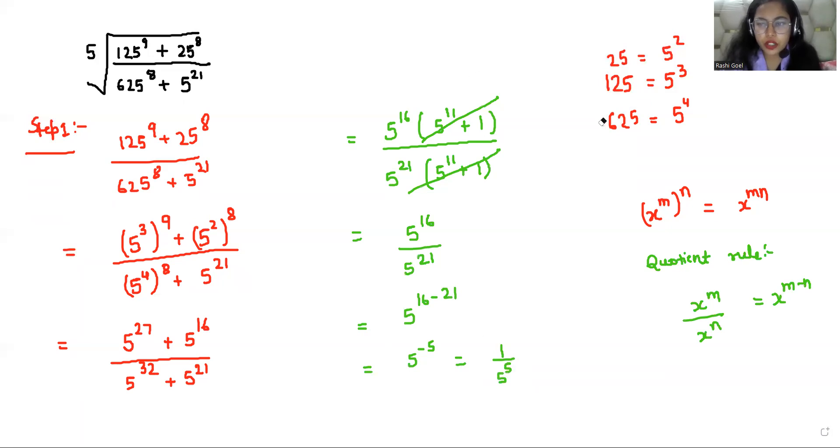Now according to the question, we have to find the value of the fifth root. So fifth root of 1 over 5 power 5. I can write this by removing the root and writing as power 1/5, so that's 1 over 5 power 5 raised to power 1/5.